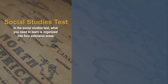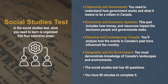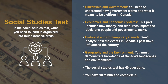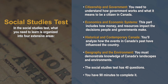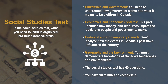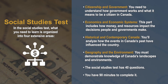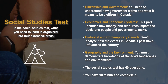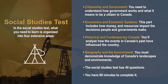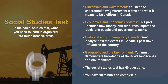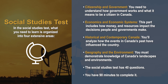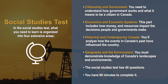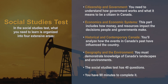In the social studies test, what you need to learn is organized into four areas: citizenship and government — understand how government works and what it means to be a citizen in Canada; economics and economic systems — how money and resources impact the decisions people and governments make; historical and contemporary Canada — analyzing how events in Canada's past have influenced the country; and geography and the environment — demonstrating knowledge of Canada's landscapes and environments. The social studies test has 40 questions and you have 90 minutes to complete it.